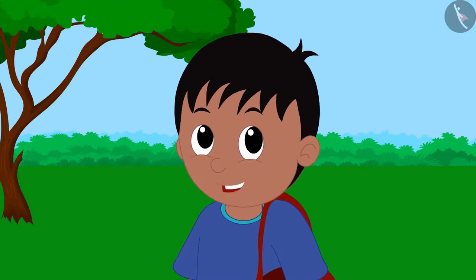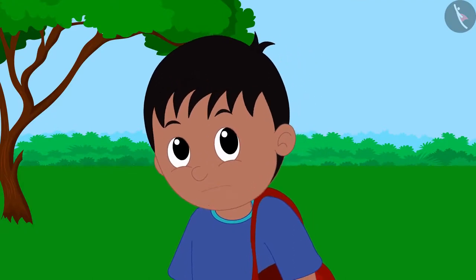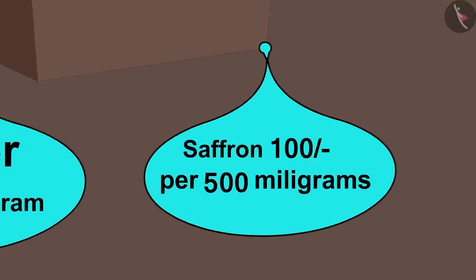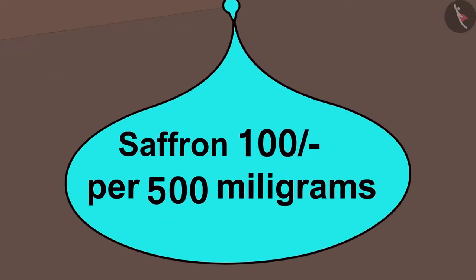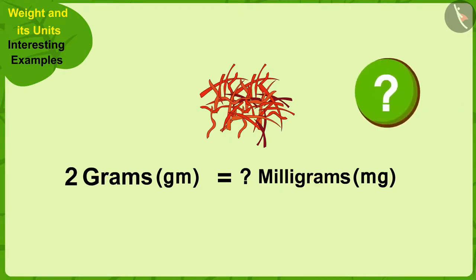Okay, I have to buy 1 kilogram and 450 grams of paneer. Now, the cost of saffron is written in milligrams here. So, how many milligrams will be equal to 2 grams of saffron? Children, can you help Raju find an answer to this question? If you wish, you can stop the video and think of the answer.